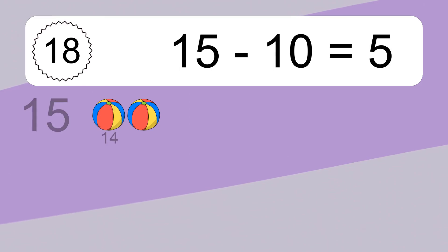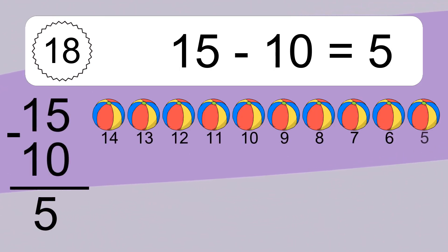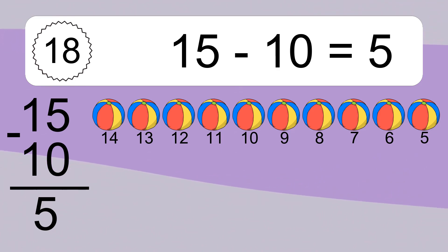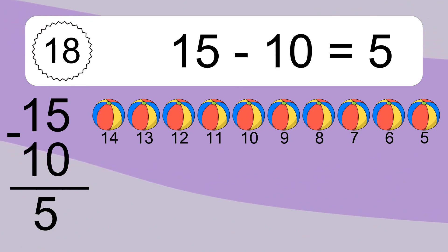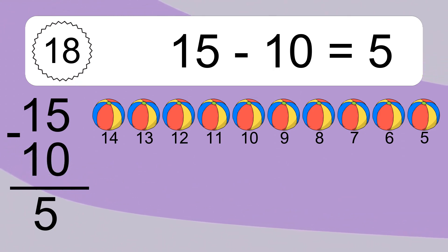15 minus 10 equals what? 15 minus 10 equals 5. Let's count it: 14, 13, 12, 11, 10, 9, 8, 7, 6, 5.